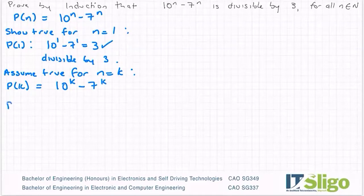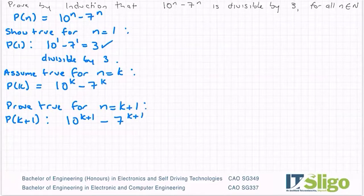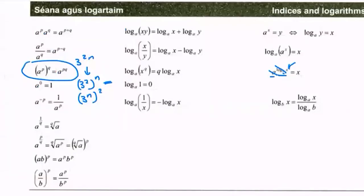So let's go ahead and prove true for the case where n equals k plus 1. My expression for k plus 1 would become 10 to the power of k plus 1 minus 7 to the power of k plus 1.